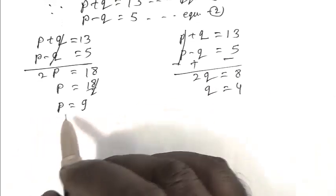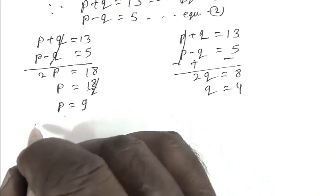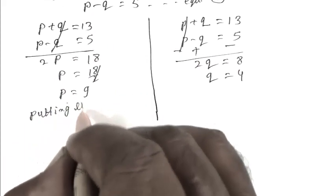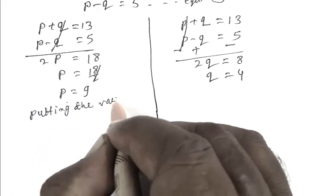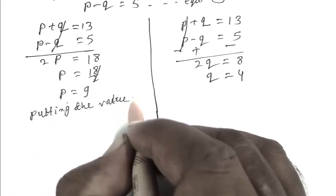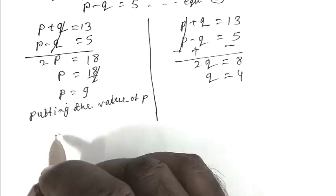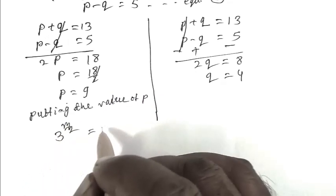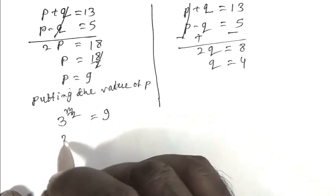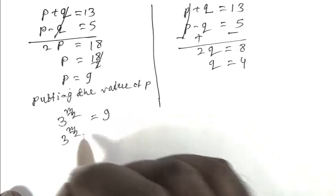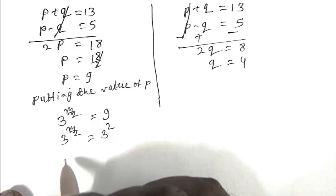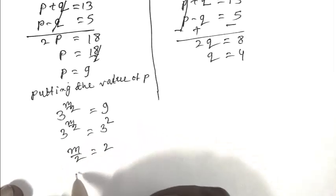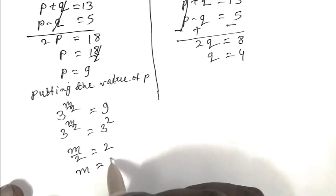Putting the value of P, that is 3 to the power M upon 2 equals 9, or 3 to the power M upon 2 equals 3 squared. Or M upon 2 equals 2, or M equals 4.